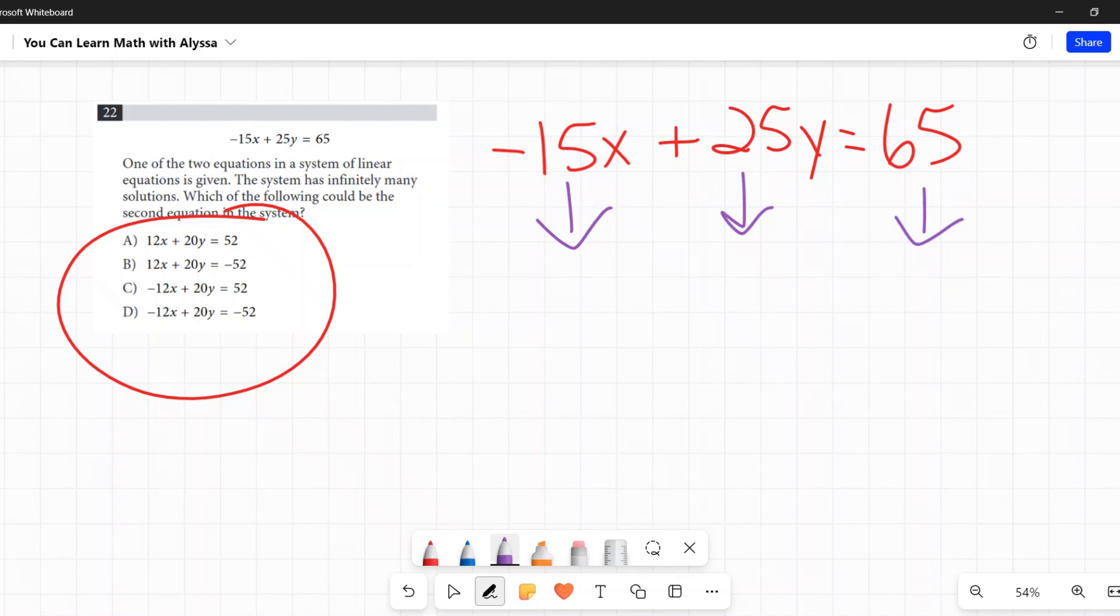For example, 15, 25, and 65 are all divisible by 5. So I could divide all of these by 5 and I would get negative 3x plus 5y equals 13. Those two lines are the same. If I drew them, they would draw right on top of each other because I divided each of those by 5 to get there.